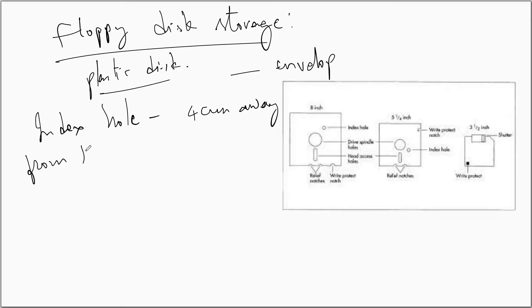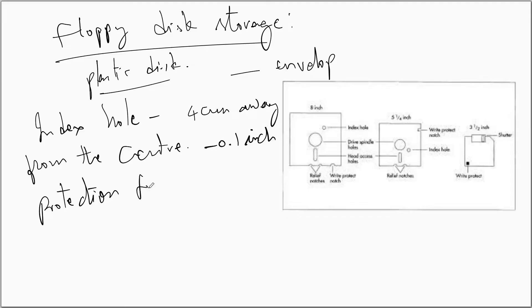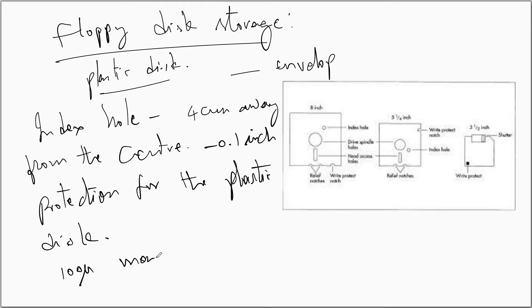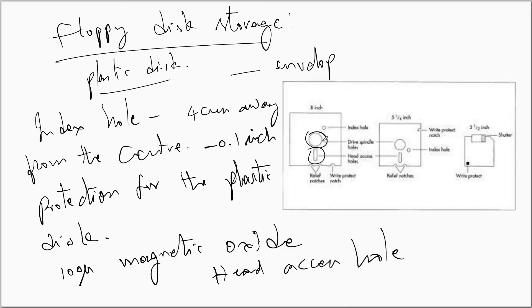The index hole is about four centimeters away from the center of the disk and acts as a reference for the tracks. The size of the index hole is about 0.1 inch. The envelope provides necessary protection for the plastic disk. Along with the envelope, the disk is slid into the read drive. The plastic disk is about 100 microns in thickness and is made with magnetic oxide.